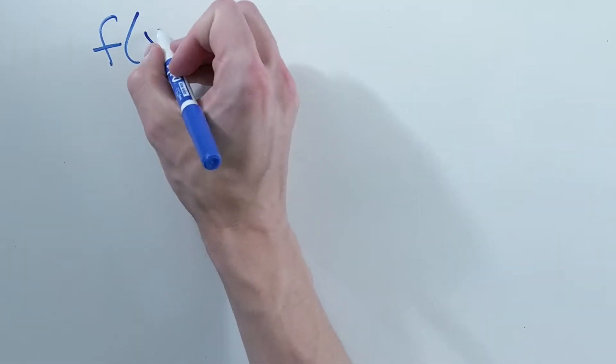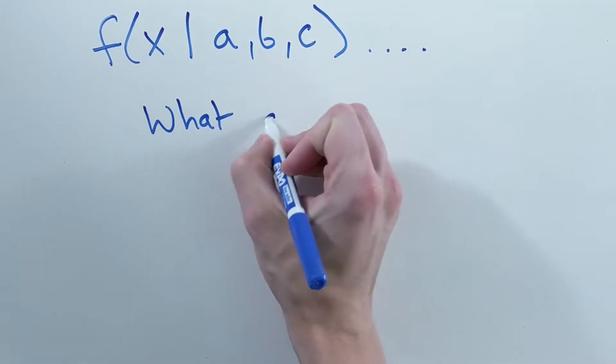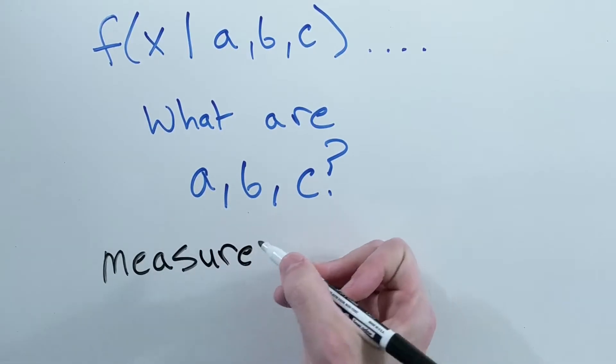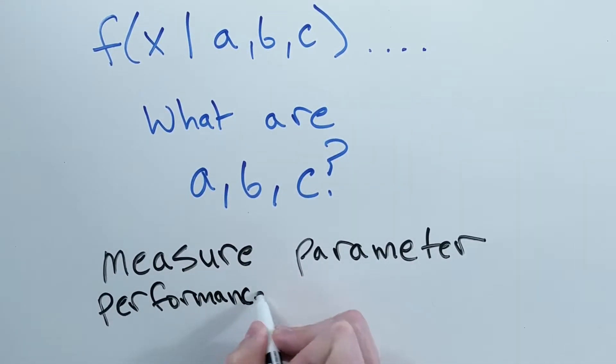Often when building statistical and machine learning models we have several parameters that we need to find the values for. Ideally we want to be able to find the best parameters and therefore the best model for our data. Since likelihood and log likelihood measure how well a model fits the data, we can use that to find the best model.